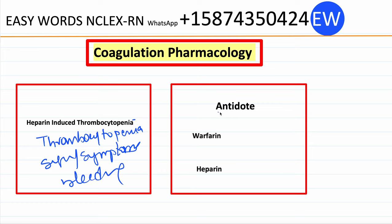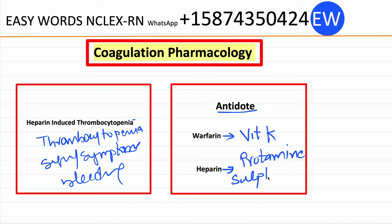Antidotes: the antidote for warfarin is vitamin K, and the antidote for heparin is protamine sulfate. That concludes anticoagulants for now. Antiplatelets, thrombolytics, and antifibrinolytics will be discussed in future lectures. Thank you for listening.